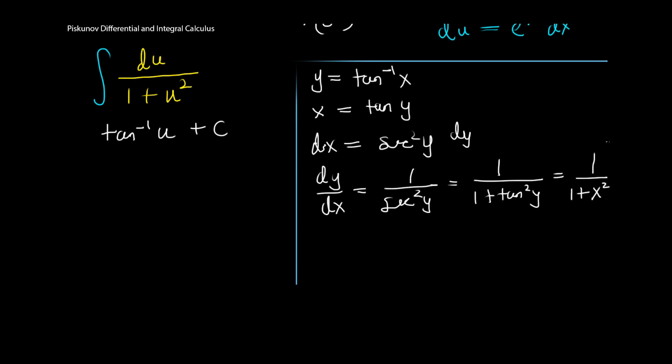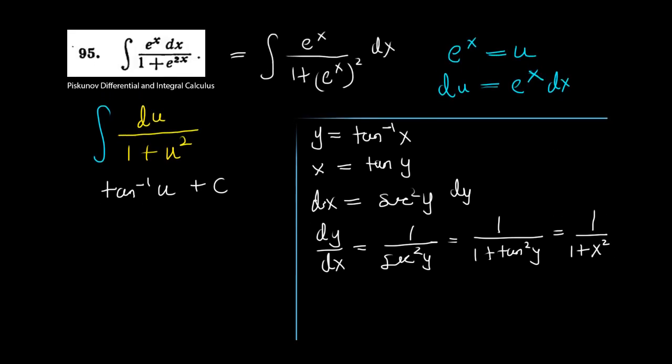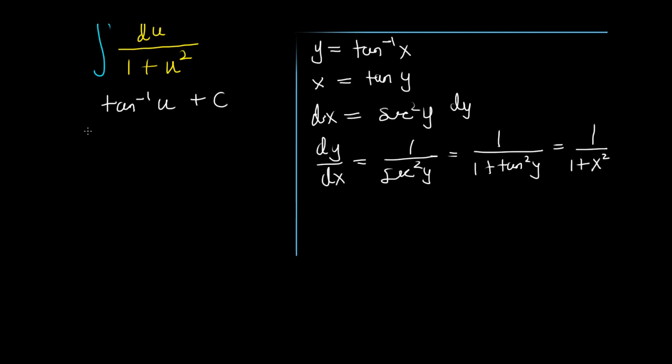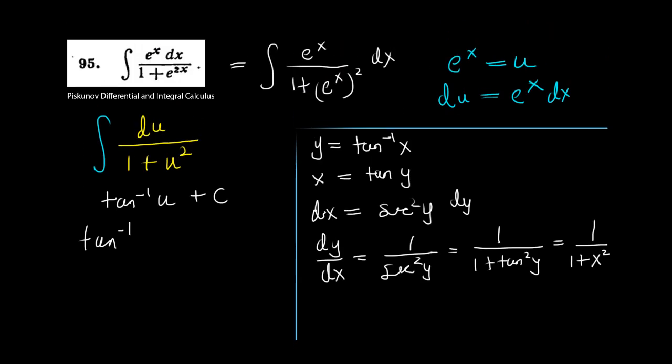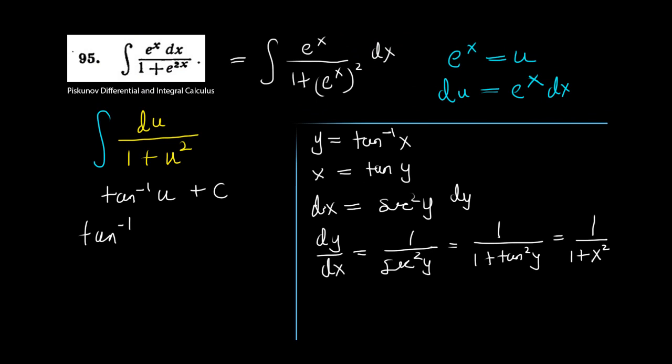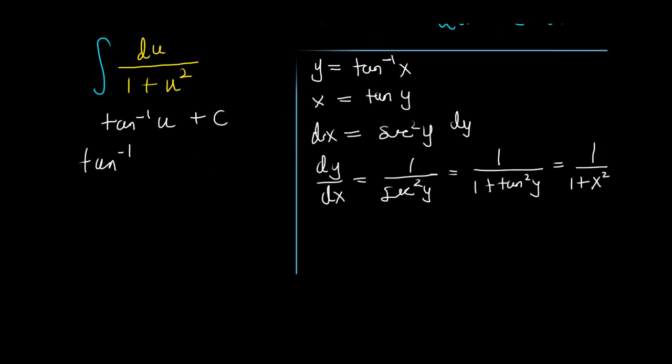But we don't write the answer in terms of u; we should write it in terms of x since that's what the original question had. We substituted u = e^x, so this is tan^(-1)(e^x) plus a constant.